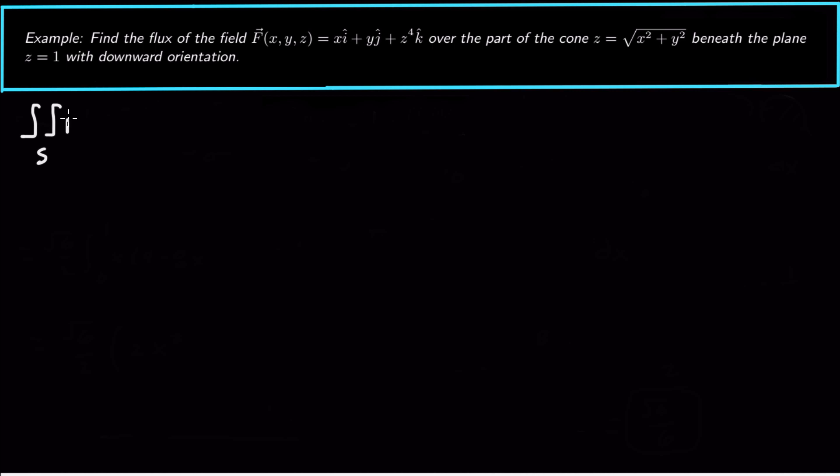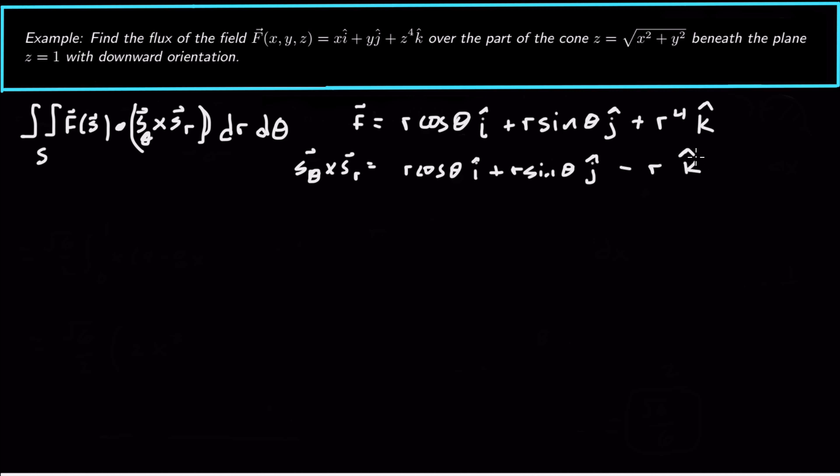So the flux is the surface integral f of s dotted with, in this case, s theta cross sr, and so then dr d theta. So what is the field? The field f is equal to, if I plug in my parameterization, it's going to be r cosine theta i hat plus r sine theta j hat plus z to the 4, it's just r to the 4, based on our parameterization. And so I want to dot product that with my s theta cross sr. And just remind ourselves, s theta cross sr is r cosine theta i hat plus r sine theta j hat minus r k hat.